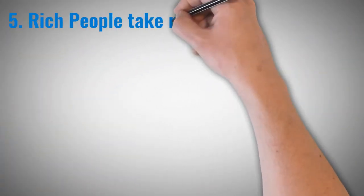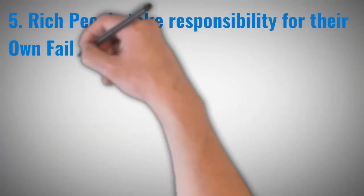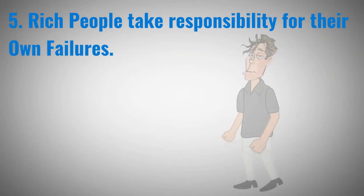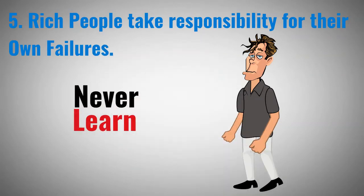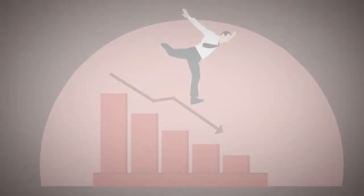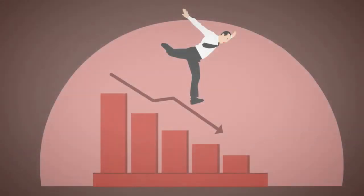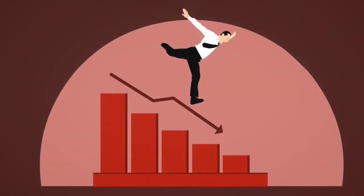Rich people take responsibility for their own failures. For poor people, there's always someone to blame for their shortcomings. They don't own up to their mistakes and never learn from the mistakes. This is what differentiates the rich from the poor. Rich people take up the responsibility for their own failures and use it to learn how to become better and improve what they are doing.